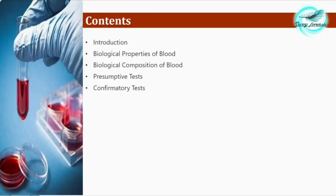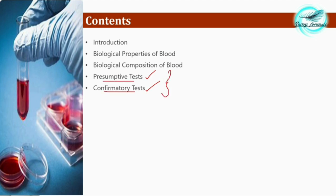These are the table of contents we'll be covering: firstly, the introduction; then the biological properties of blood, which we've already covered in the previous two video series and will just recap; third, the biological composition of blood; then the presumptive tests as well as the confirmatory tests. We won't study those actual tests in this video — we'll look at how they are useful, and the actual tests will be studied in the second part.